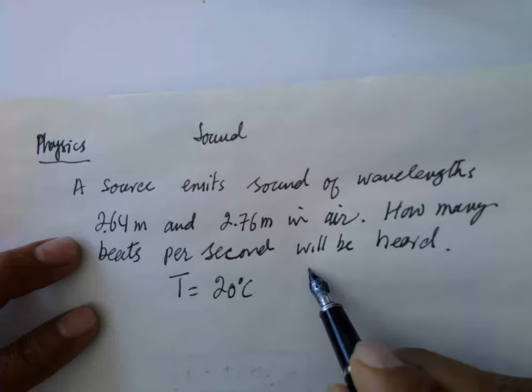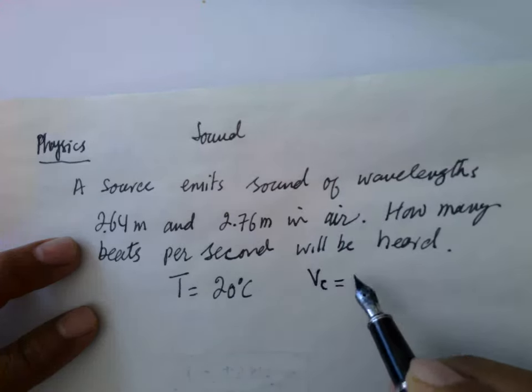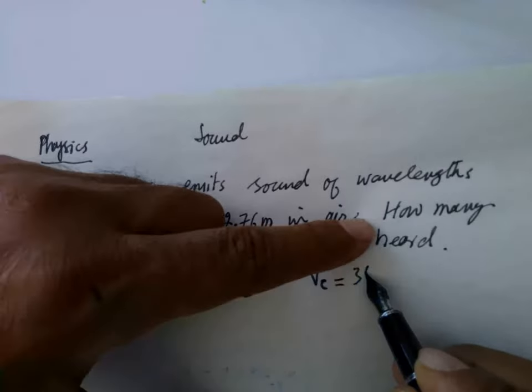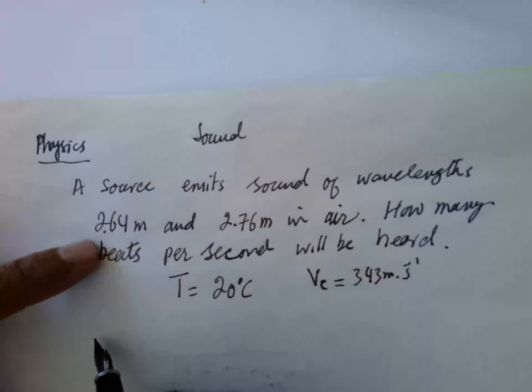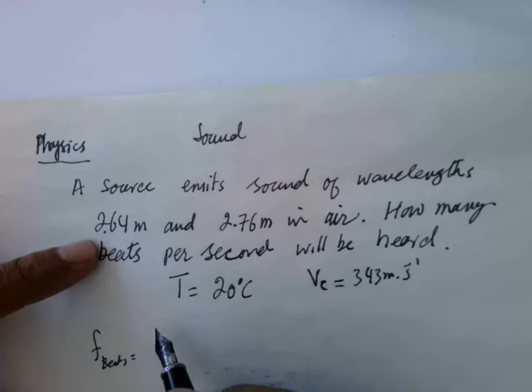So at 20 degrees C, velocity of sound is equal to 343 meters per second. The frequency of beats is equal to F1 minus F2.